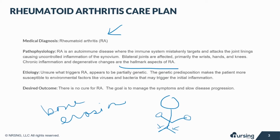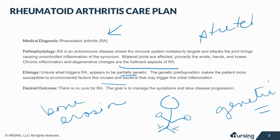Doctors are unsure of what triggers RA, but it appears to be partially genetic. The genetic predisposition makes the patient more susceptible to environmental factors like viruses and bacteria that may trigger the initial inflammation. Once the inflammation begins, the synovial fluid thickens and the tendons and ligaments weaken and stretch, resulting in the joint losing its shape and alignment.